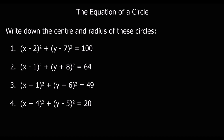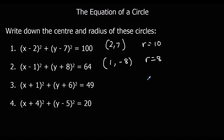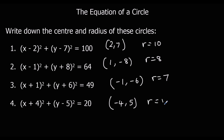Pause the video, give it a go and write down the centre and the radius of each of these circles. The first one: centre (2, 7) and radius 10. Second one: centre (1, -8) and radius 8. Third: centre (-1, -6) with a radius of 7. And finally, centre (-4, 5) and a radius of root 20. We could simplify that, or we could just leave it as root 20.